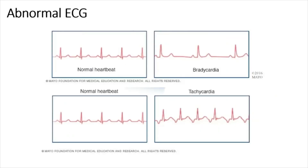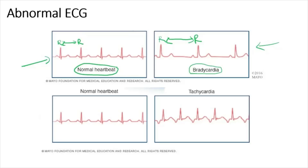An abnormal ECG is a sign of an unhealthy heart or irregular cardiac rhythm. This shows a bradycardia ECG. Bradycardia is the condition where the individual has a resting heart rate less than 60 beats per minute. In a bradycardia ECG, the distance between the R-R interval is longer compared to the distance in a normal ECG. Bradycardia ECG is produced when the SA node fails to discharge electrical impulses or discharges them slower than normal.